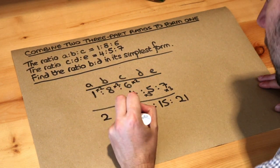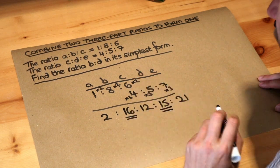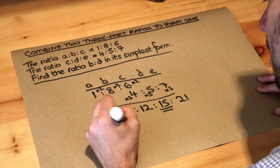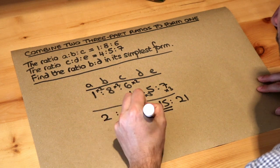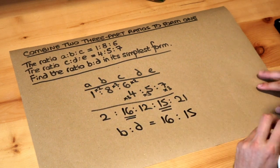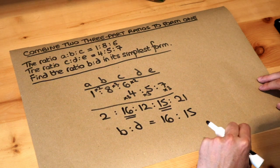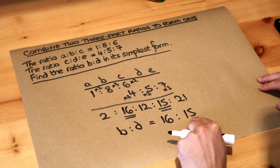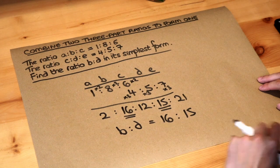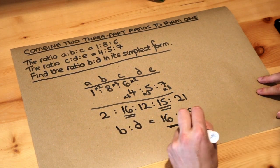B is this one and D is this number here, so the ratio of B to D is 16 to 15. Can we simplify that any further? Well, there's no factor that goes into both 16 and 15 other than 1, so there's nothing we can divide these by. So this is the final answer.